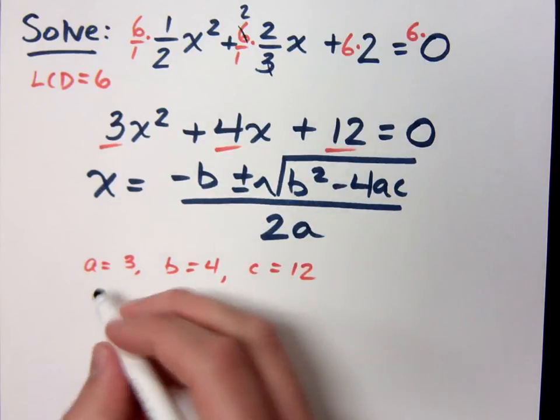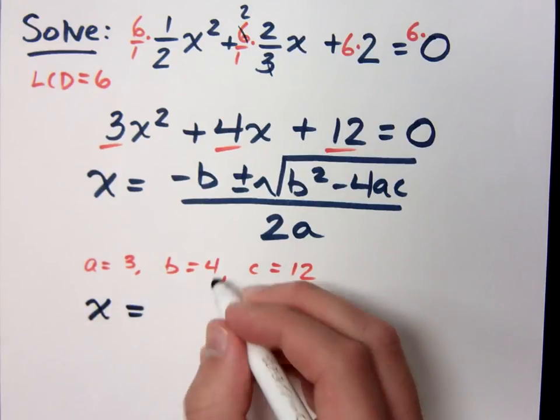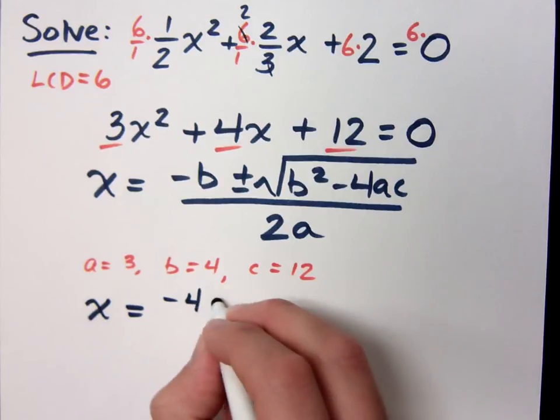If I don't want to do it, you don't want to do it. So let's see. x equals negative b. Well, b is 4, so that's going to be negative times 4 is negative 4.